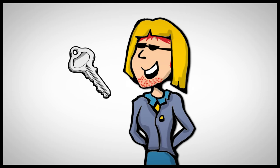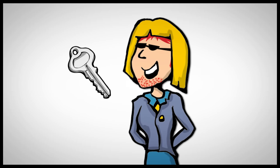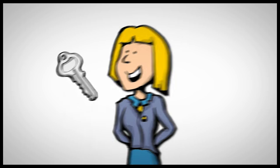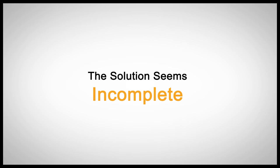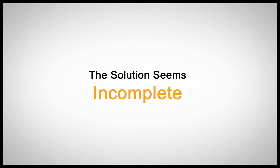But how do we really know that Bob really got Mary's public key? Someone could have pretended to be Mary and sent Bob her public key. The solution seems incomplete.